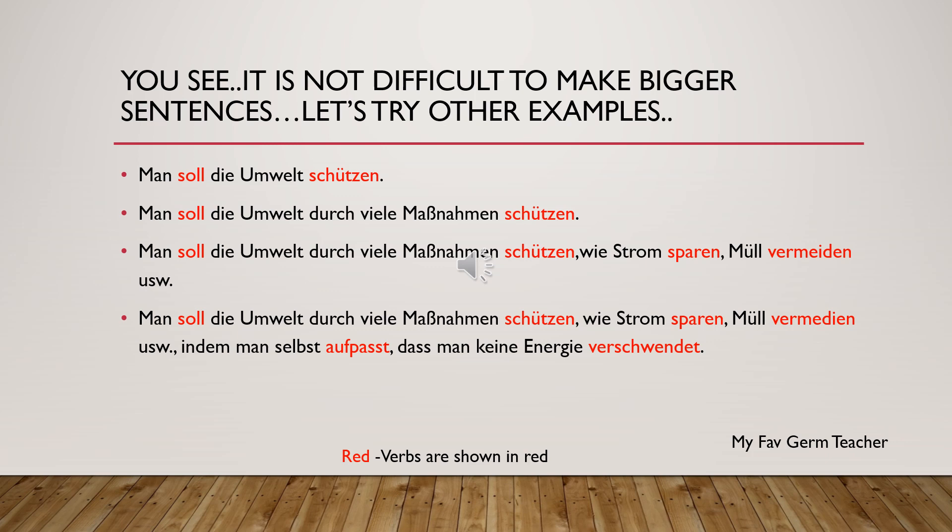Further extended: 'Man soll die Umwelt durch viele Maßnahmen schützen, wie Strom sparen, Müll vermeiden und so weiter.' The measures used to protect the environment could be sparing electricity, avoiding waste, etc.